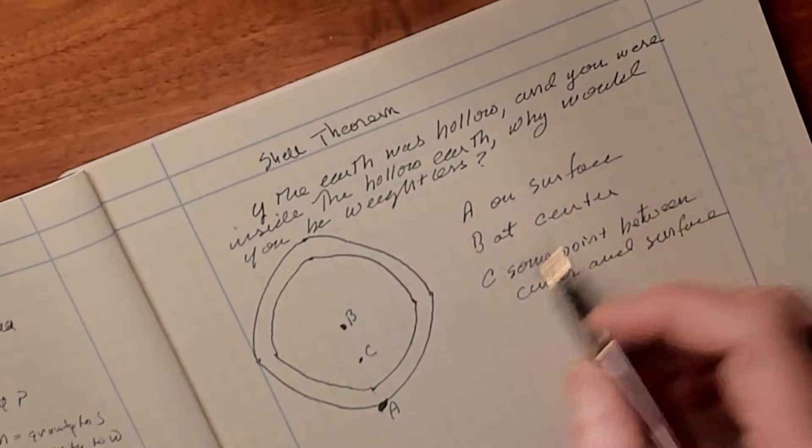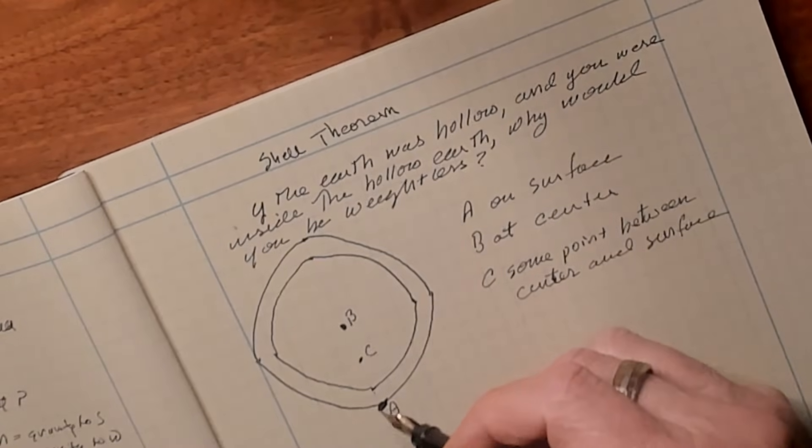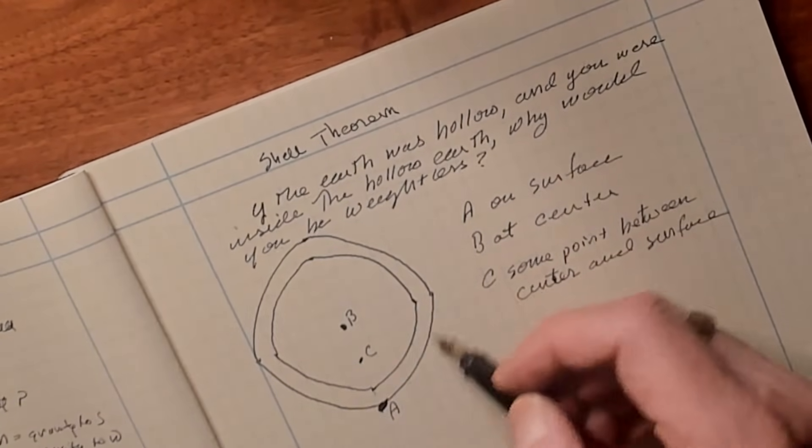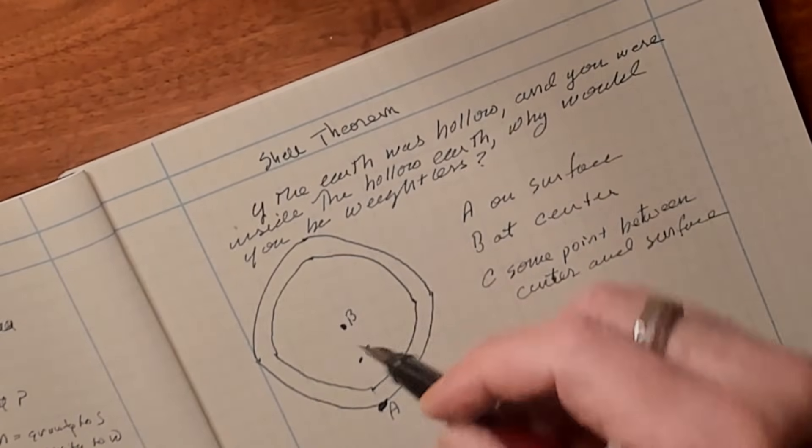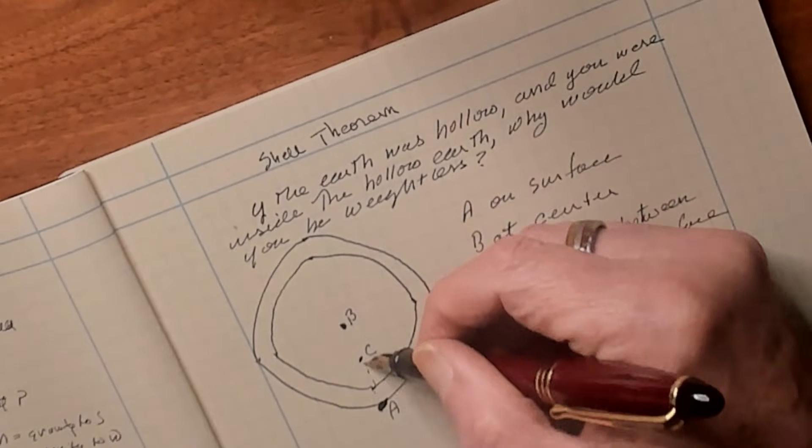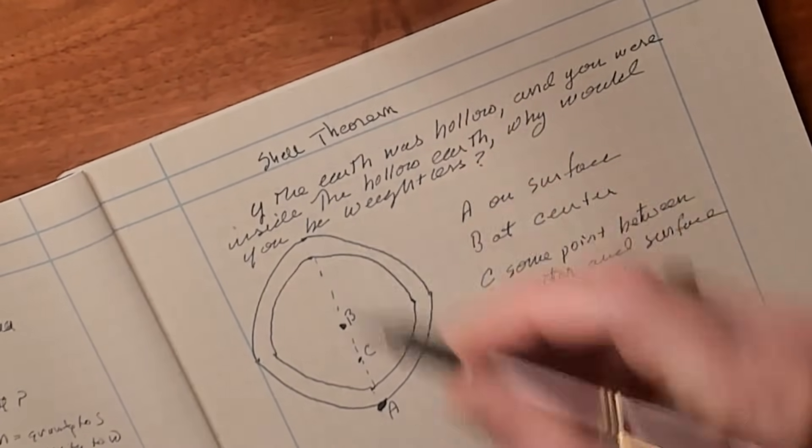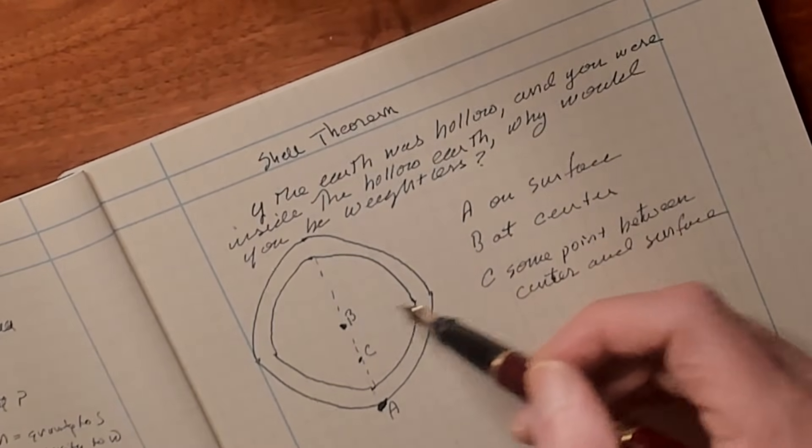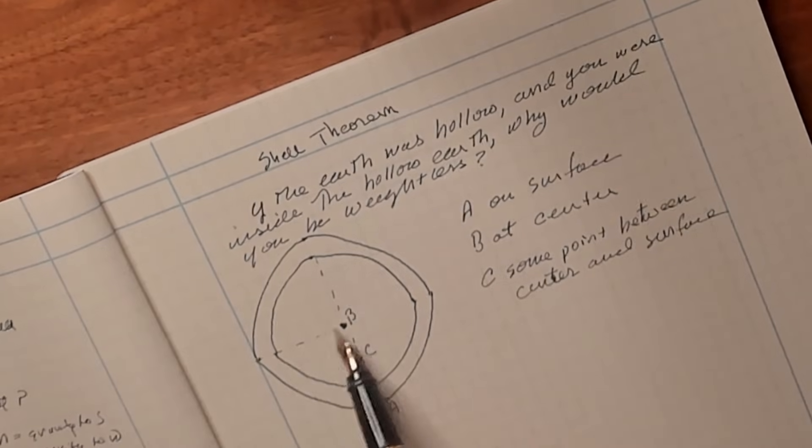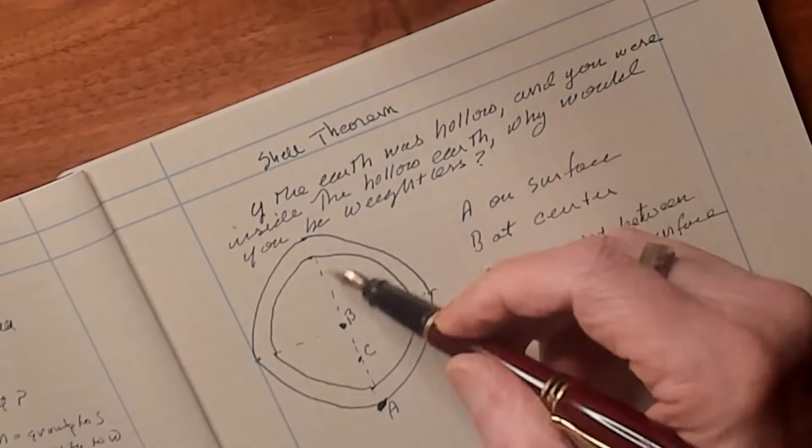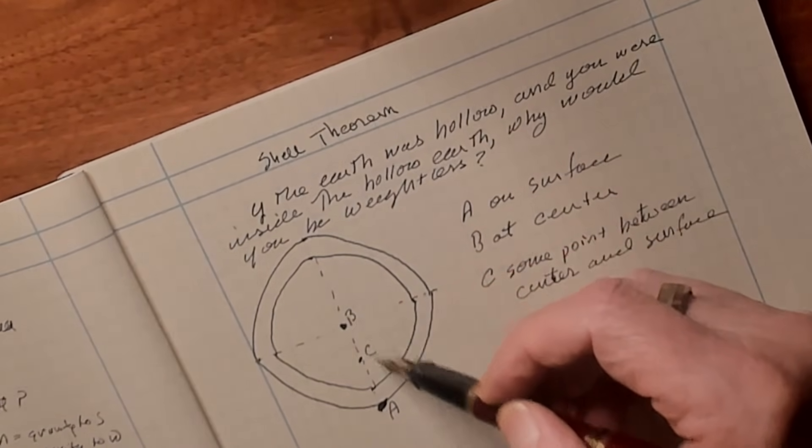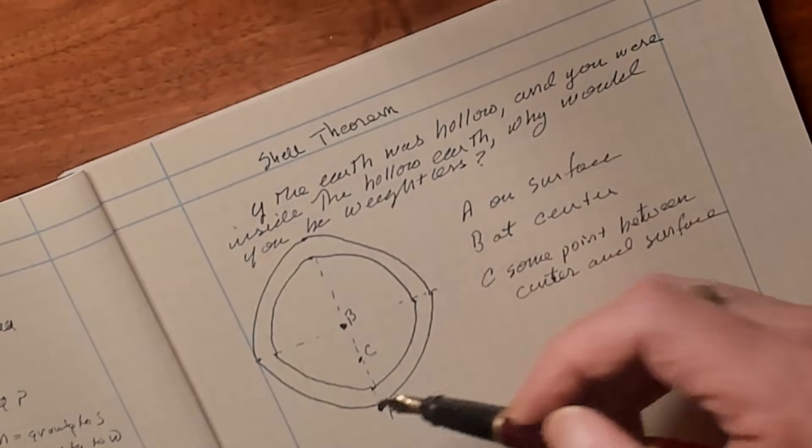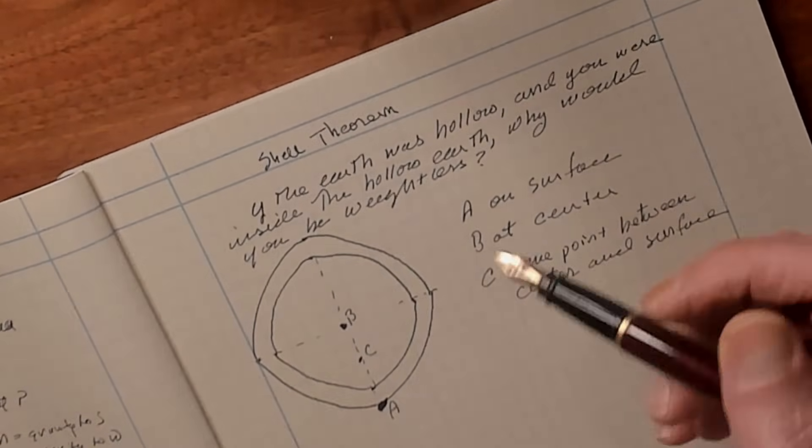Now if we were at point A, which is on the surface, what we would feel would be the gravity of the mass of the entire earth. Because you can imagine if we kind of draw a line straight up like this, we have an equal mass on the left side of the line as the right. We also have an equal mass on the north end of the sphere and the south end of the sphere.